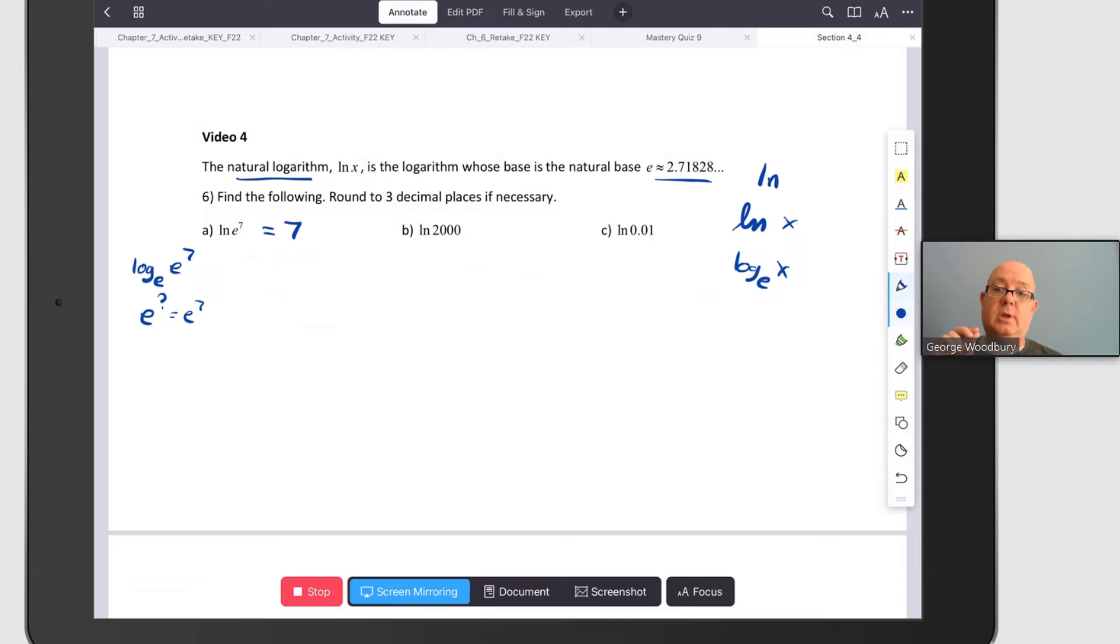Now, the thing that's important to remember here is that the natural logarithm and e are basically inverse functions of each other, and so what one does, the other undoes. So ln of e to the x is always going to be x.